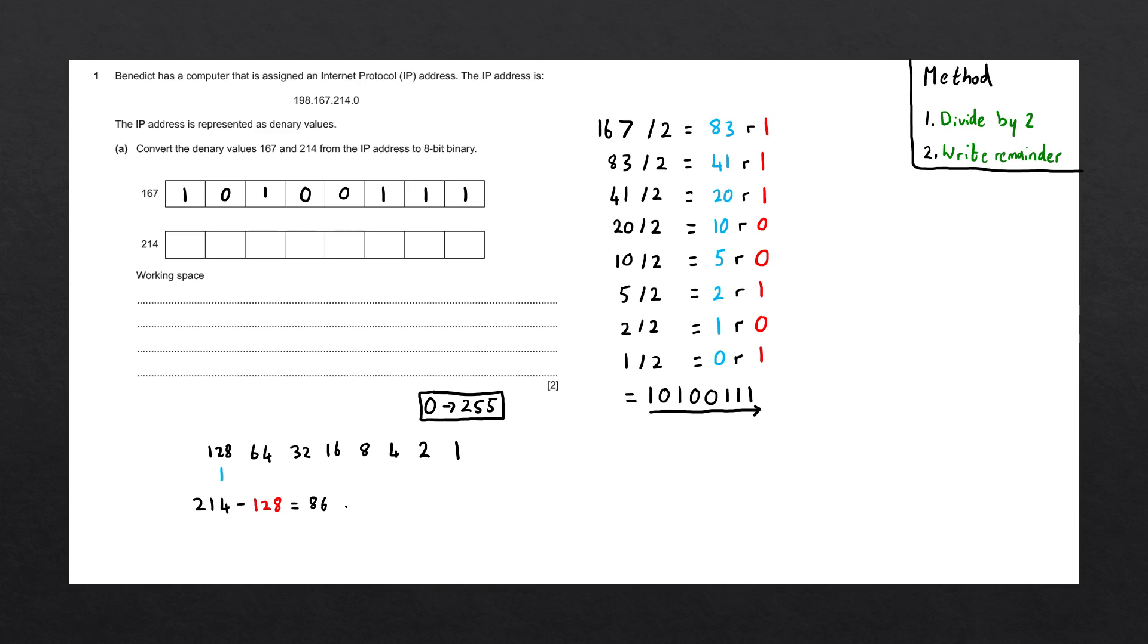Yes, it does. So we'll subtract 64 from this value. And we'll place a one underneath 64. 86 minus 64 gives us 22. And we'll move on with the next value. 32 does not go into 22. So we're going to write a zero underneath 32. 16 does go into 22. So we're going to subtract 16 from 22. And we're going to write a one underneath 16. The result of this calculation is going to be six.